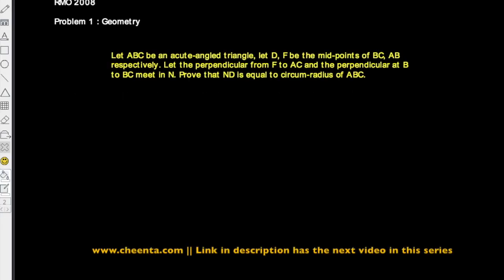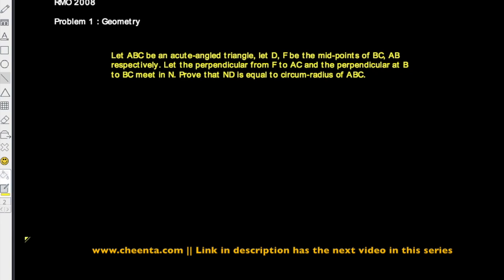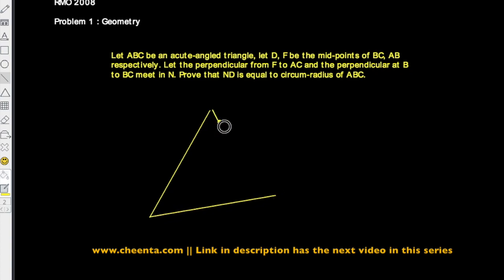This geometry problem is from the Regional Mathematics Olympiad 2008. It's a beautiful problem involving a cyclic pentagon, as you will see in a moment. We start with an acute angle triangle ABC. If you do not have the diagram, I suggest you pause the video and try to draw the picture on your own.